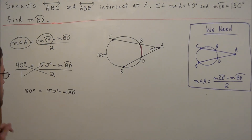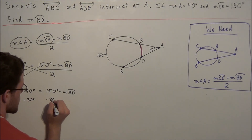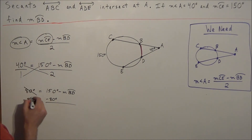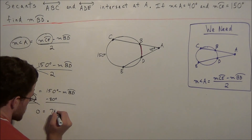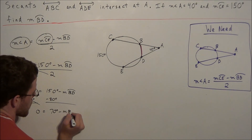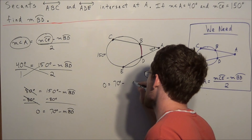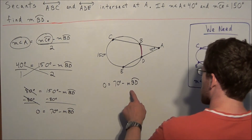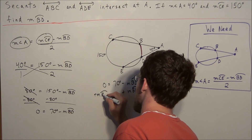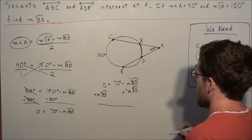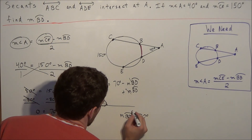To solve for the measure of arc BD, we subtract 80 degrees from both sides of this equation. On the left-hand side, 80 degrees minus 80 degrees cancels, giving us 0. On the right-hand side, 150 degrees minus 80 degrees is 70 degrees, so we have 0 equals 70 degrees minus the measure of arc BD. Adding the measure of arc BD to both sides gives us our final answer: the measure of arc BD is equal to 70 degrees.